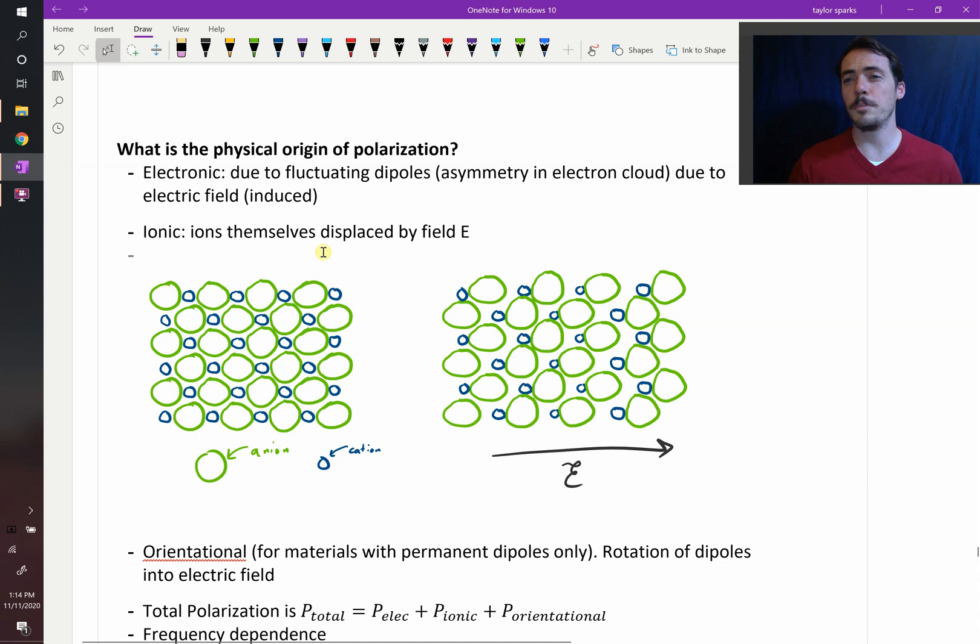Alright, so you get this polarization by putting something between your parallel plate capacitor. Where's that coming from? What's the physical origin of it? We showed you one of the molecule where the molecule can actually rotate, but there's actually a couple different mechanisms and origins of this.